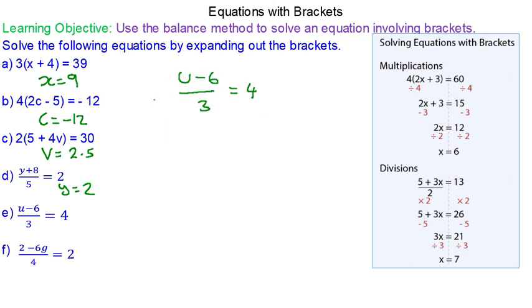For question E. We can multiply both sides by 3. We get rid of the division of 3. So u minus 6 equals 12. Add 6 to both sides. So u will equal 18.